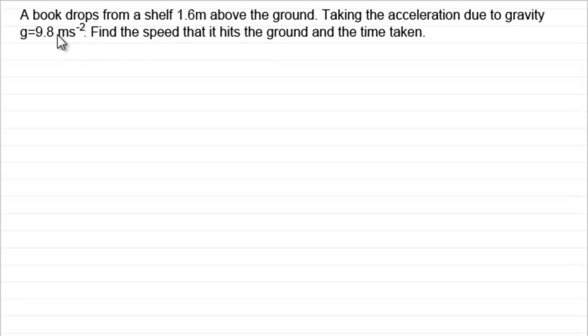So what we've got here is a book drops from a shelf 1.6 meters above the ground. Taking the acceleration due to gravity to be g, which equals 9.8 meters per second per second, find the speed that it hits the ground and the time taken.